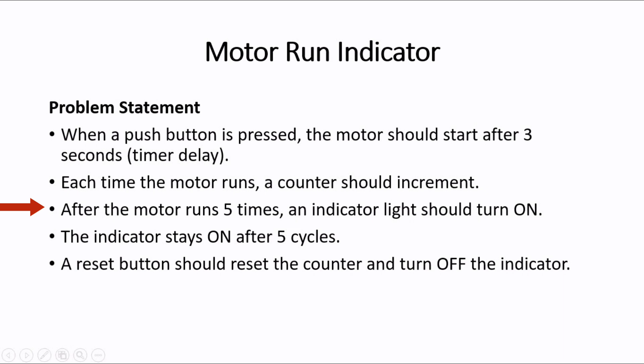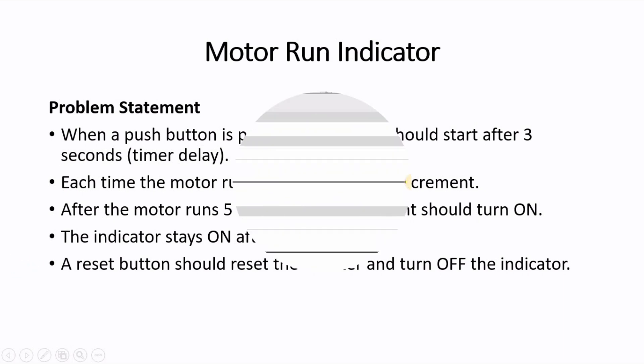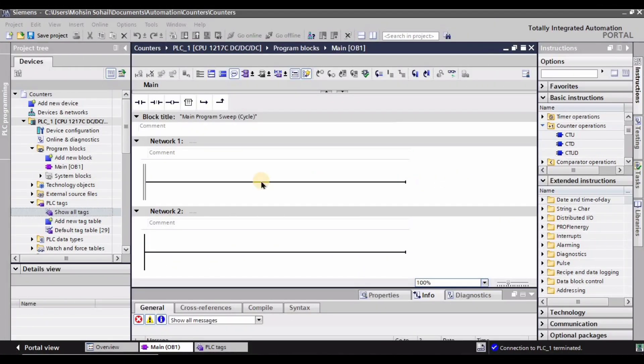The third step is after the motor runs five times — or three times, it's up to us — an indicator light should turn on. The fourth step is this indicator must stay on after the five cycles until we manually reset it. The fifth step is a reset button should reset the counter and turn off the indicator.